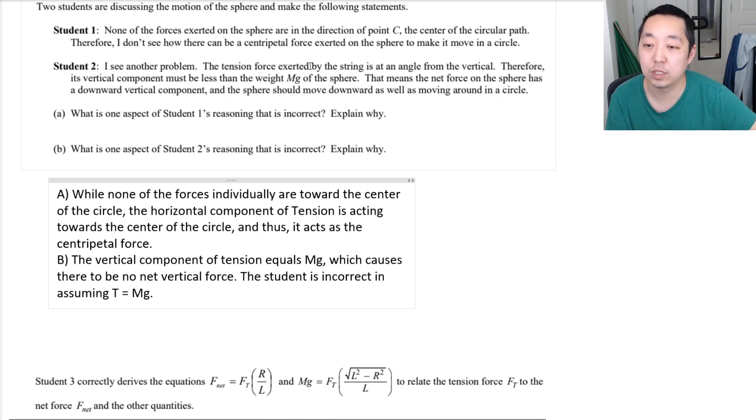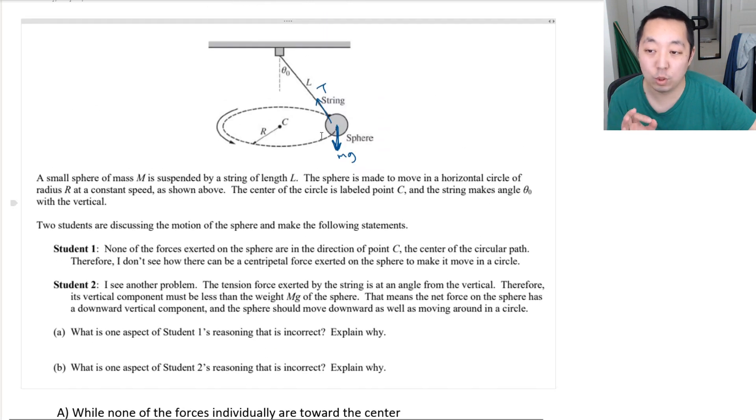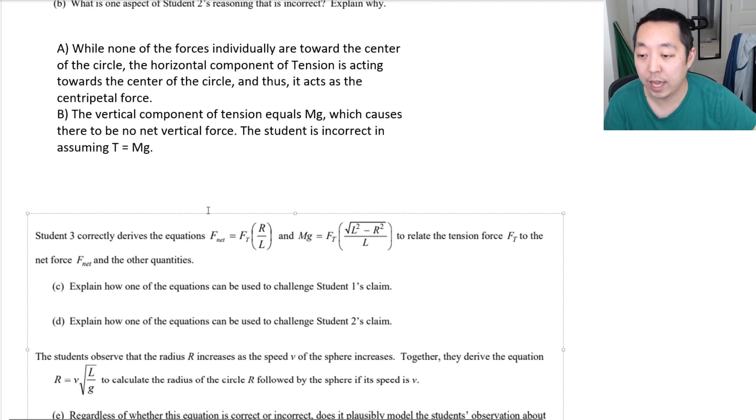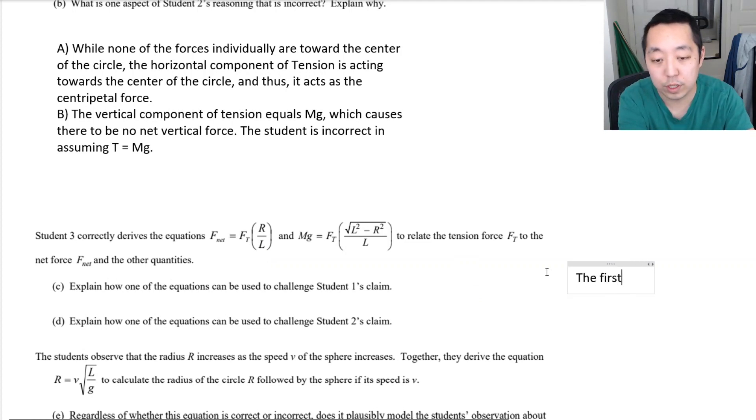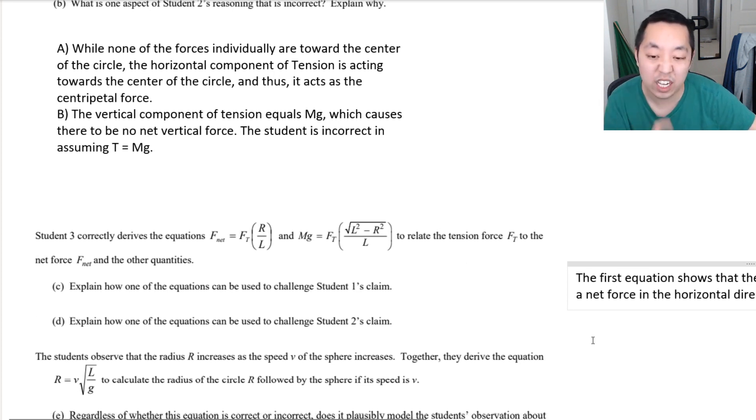How does this equation, remember student 1 is saying that none of the forces point towards the direction. The left equation is the net force. Remember, the net force ultimately, because there's no vertical component, the net force has to be the centripetal force, which is towards the center of the circle. And so, this equation is illustrating that. This equation illustrates that there is a net component of the force, and it is in the horizontal direction. I would say the first equation shows that there is a net force in the horizontal direction, which is the centripetal force.